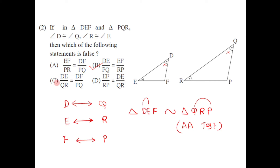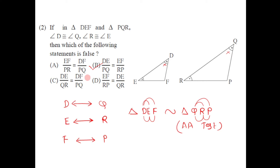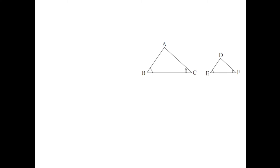So option B is the wrong (false) alternative. Checking option C: DE/QR = DF/PQ — DE's corresponding side is QR, and DF's corresponding side is PQ, so this is correct. The last alternative EF/RP = DE/QR is also correct. Therefore, among all four, only option B is wrong, so that is our answer.